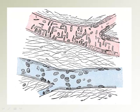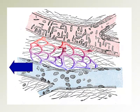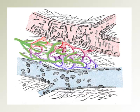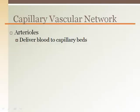Nutrient-rich and oxygenated blood is delivered to the tissues by arterioles feeding capillary beds. Venules drain capillary beds by removing waste-filled, oxygen-depleted blood. The exchange of substances between blood inside the capillary and the cells outside the capillary often leaves extra fluid in the interstitial spaces. Some of this fluid is not returned back to the blood in the capillary bed, but is returned through lymphatic vessels from the tissue spaces.